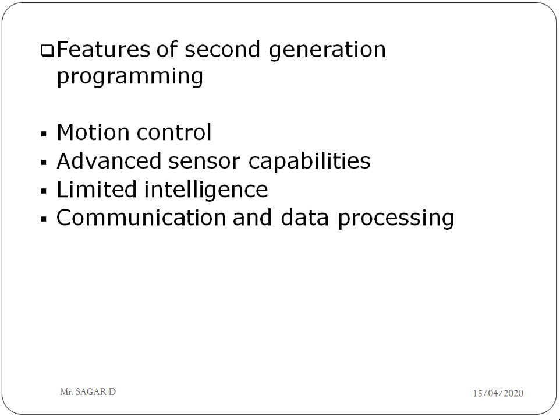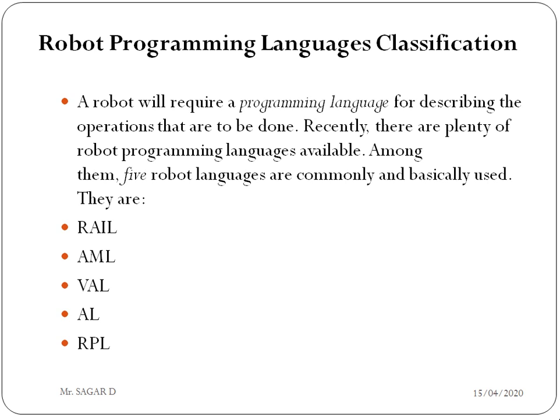For robo programming language classification, a robot requires a programming language for describing the operations to be performed. There are basically five types of robo programming languages.